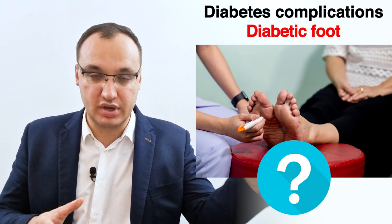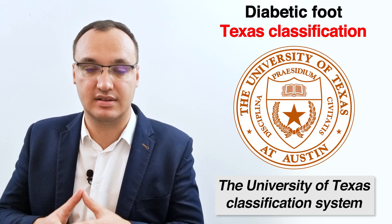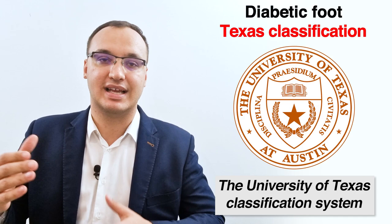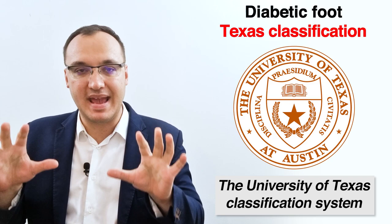What do we check and how do we check it? We check it with a classification system that we will be dealing with today: the University of Texas classification system. This was composed in order to help doctors in classifying the different types of wounds that we can see.